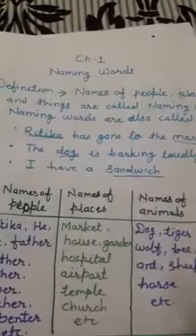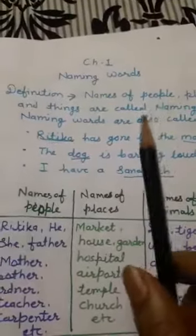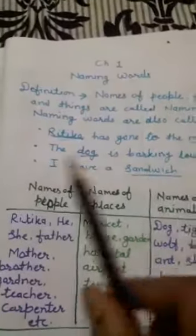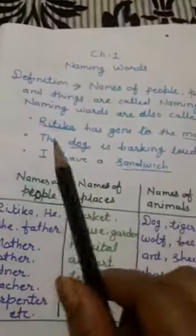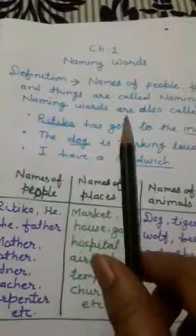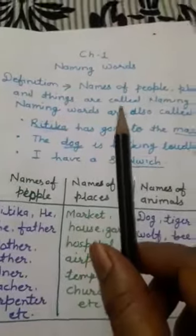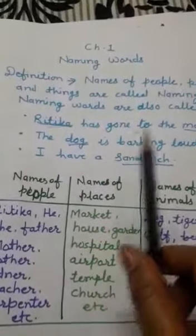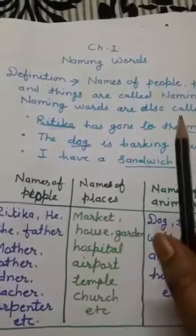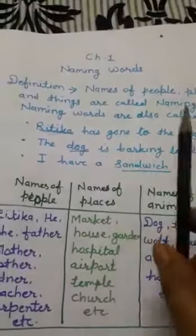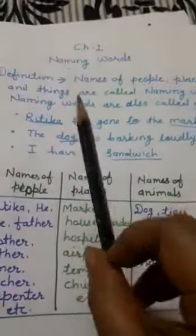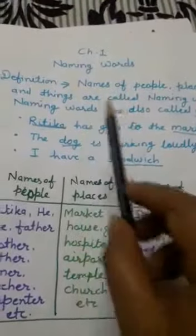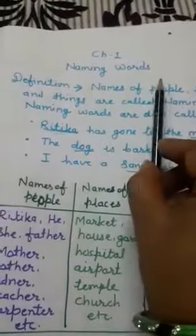Means everything, every place, every person has their own name. Every thing has their own name. That is called naming words.